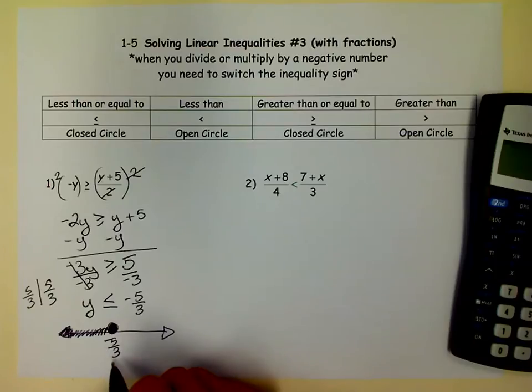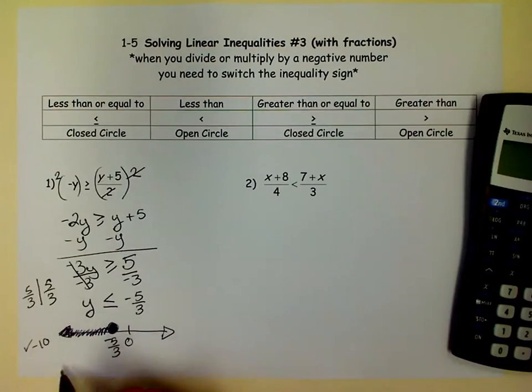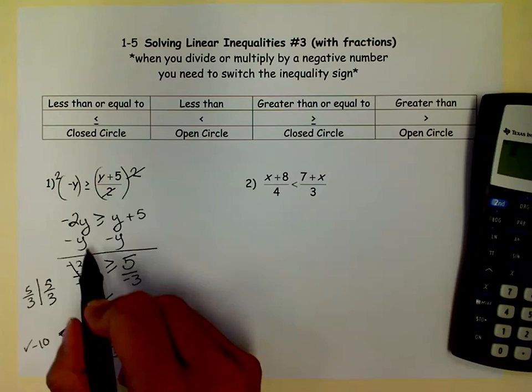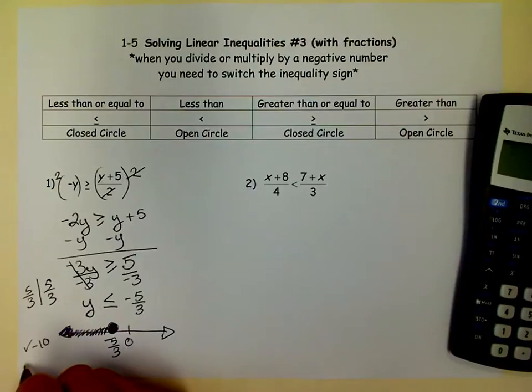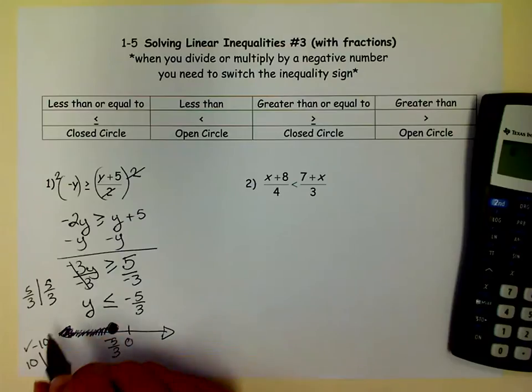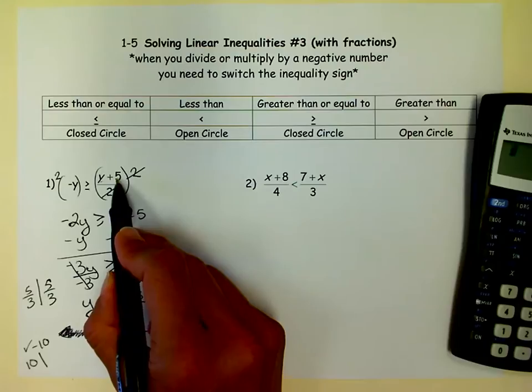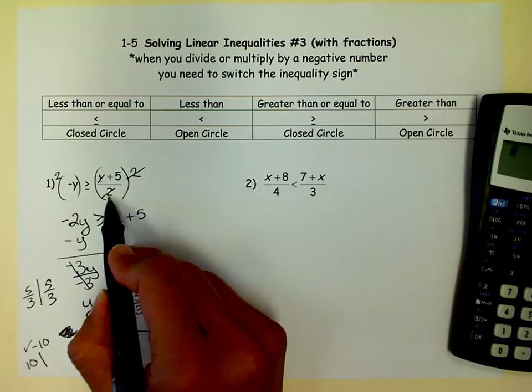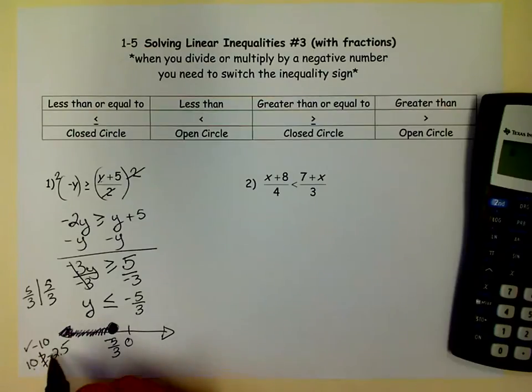But if I wasn't, I can just check a point. You know, this is a negative number. This is 0 over here. So I'm going to pick a negative number. I'm just going to check negative 10 to make sure this works. So I go back up here and I put a negative 10 in for y. When I put a negative 10 in for y, I get a negative negative 10, which is a positive 10. So the left side says 10. I'm going to put a negative 10 in for this y. And when I do, I get a negative 5 on top divided by 2 is negative 2 and a half. 10 is definitely greater than or equal to, which is what we have, negative 2.5.